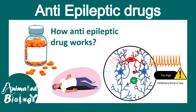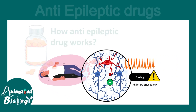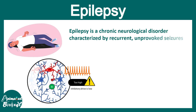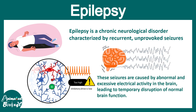In this video we'll be talking about anti-epileptic drugs and how they work at a molecular level. In order to understand how these drugs work, we have to first understand what epilepsy is. Epilepsy is a chronic neurological disorder characterized by recurrent unprovoked seizures. These seizures are thought to be abnormal and excessive electrical activities of the brain that lead to temporary disruption of normal brain function.